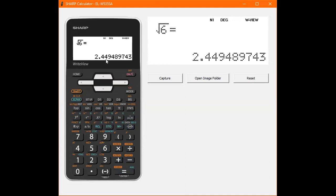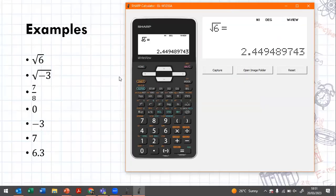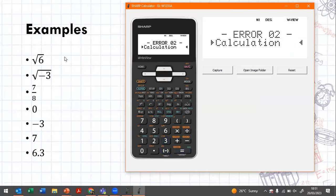If I try to take the square root of negative three for example. Here you would see the square root of negative three gives us an error. So we can see that this is a non-real number.